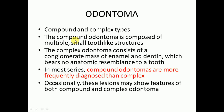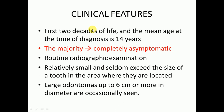There are two types of odontoma: compound and complex. The compound odontoma is composed of multiple small tooth-like structures, whereas the complex odontoma consists of a mass of enamel and dentine which bears no anatomic resemblance to a tooth. Compound odontomas are more frequently diagnosed than complex, because compound odontomas more closely resemble tooth structure. Occasionally these lesions may show features of both compound and complex odontoma.